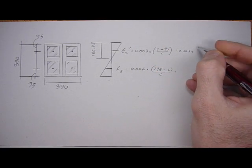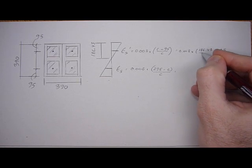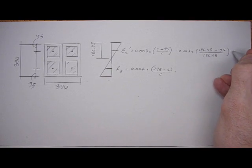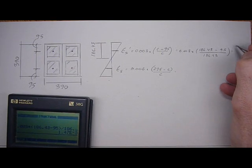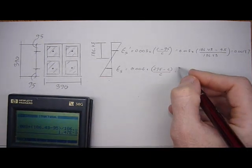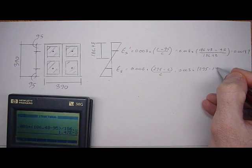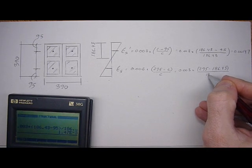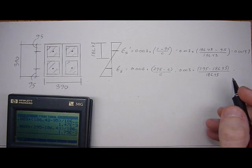0.003 times 186.43, so that's 0.00147. And then the strain in the bottom steel is 0.00175.